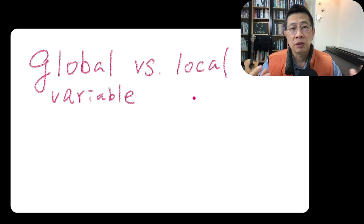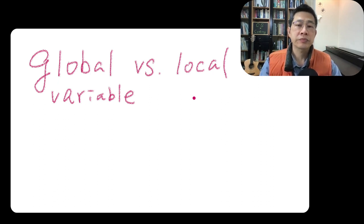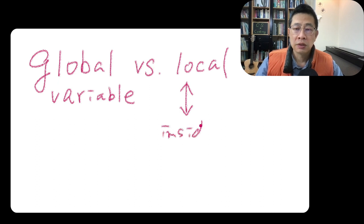So if you define the variable as a local, which means they only valid in some particular function. So usually the local variable, they have an idea to do with inside the function.